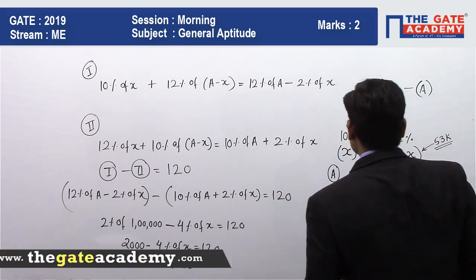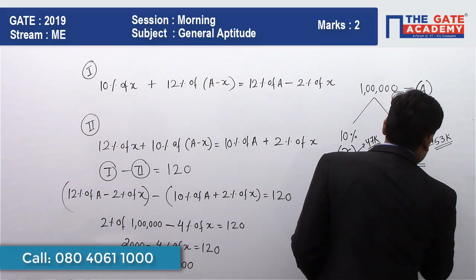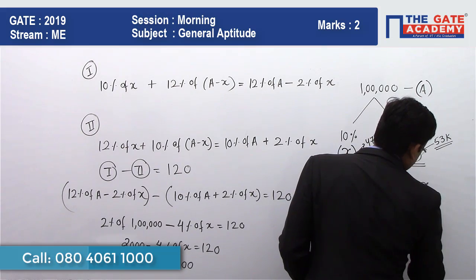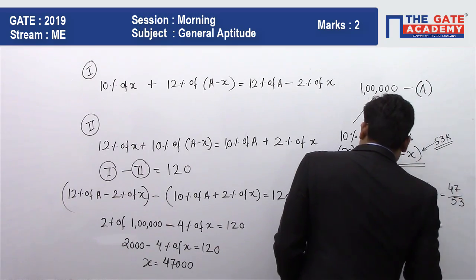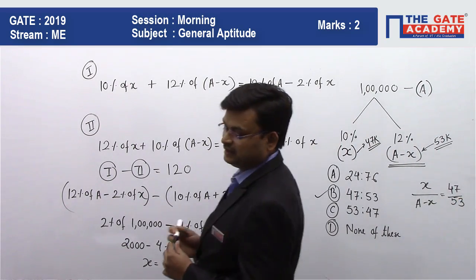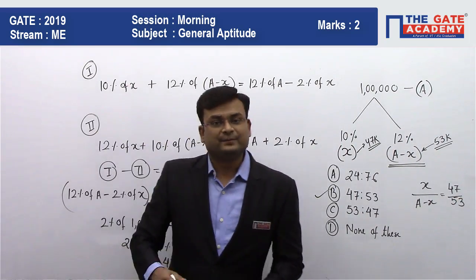So what is the ratio? The ratio will be 47:53. So my answer will be B.